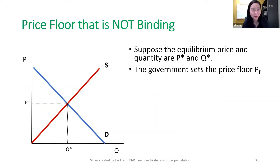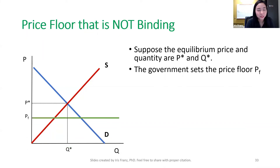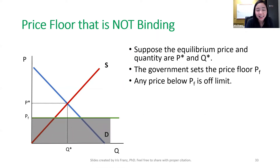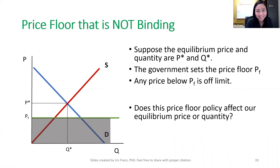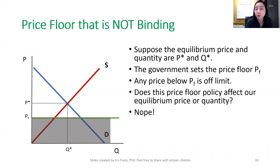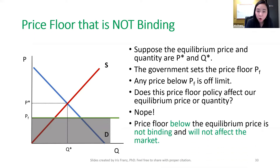Now let's take a look at our demand and supply curve. Suppose our equilibrium price and quantity are P* and Q* respectively, and the government sets a price floor at PF below the equilibrium price. Anywhere below PF — this gray area — will be off-limit. But our equilibrium price P* is above the price floor, so we are above this gray area. Therefore, a price floor below the equilibrium price is not binding and will not affect the market.